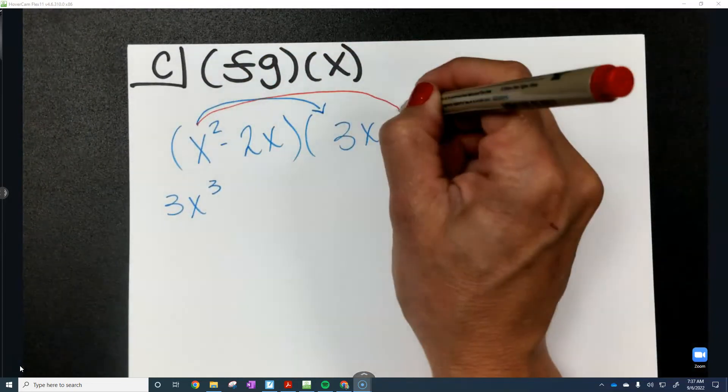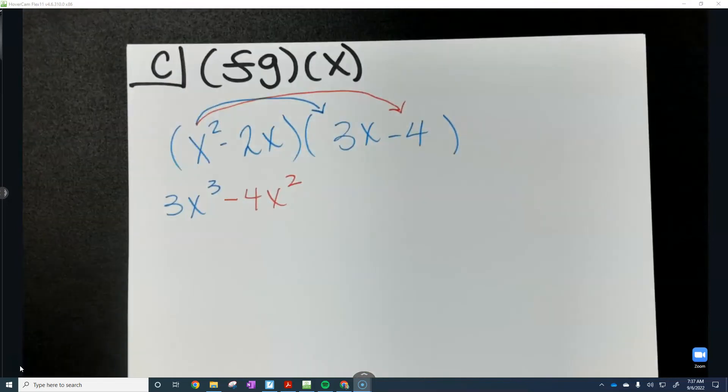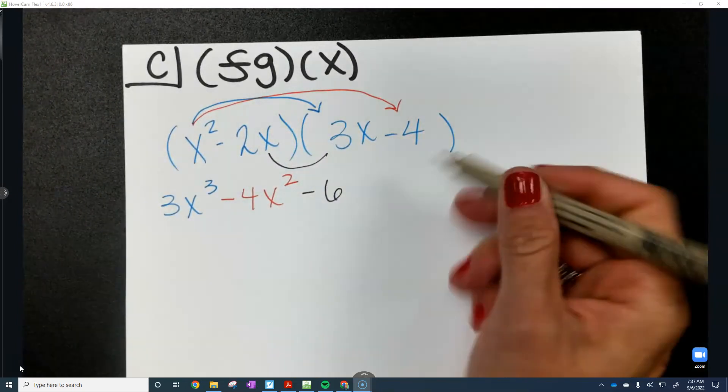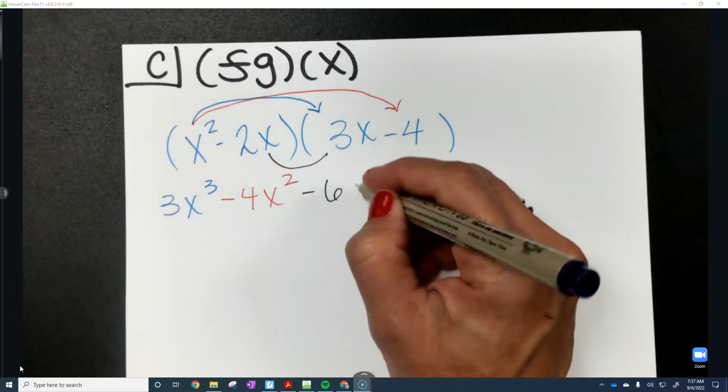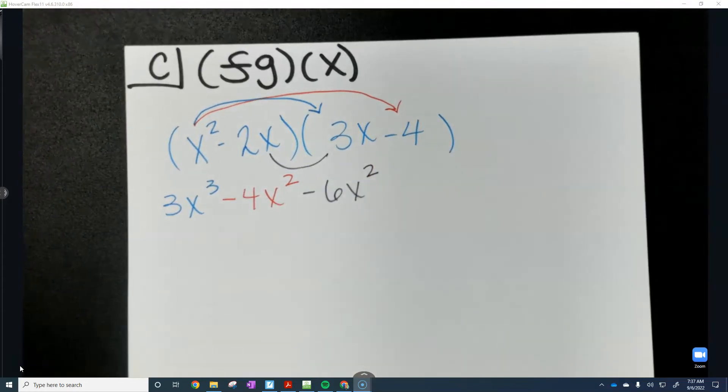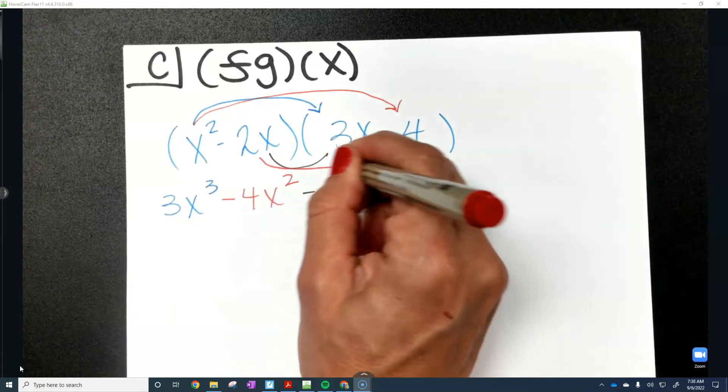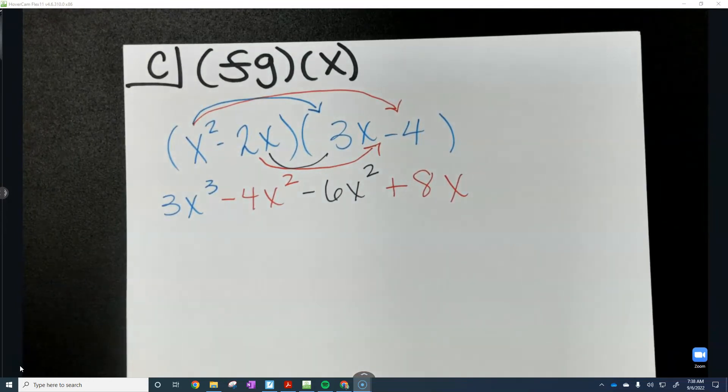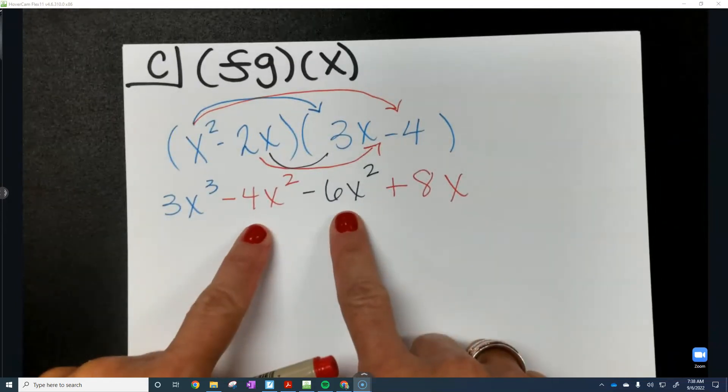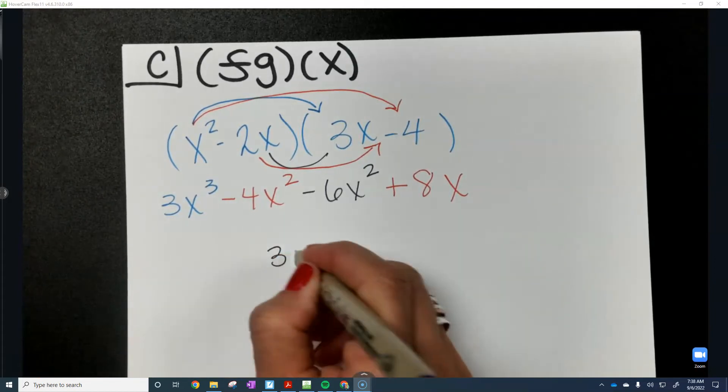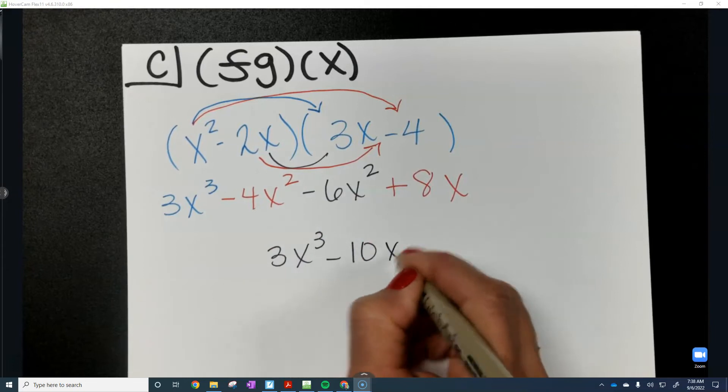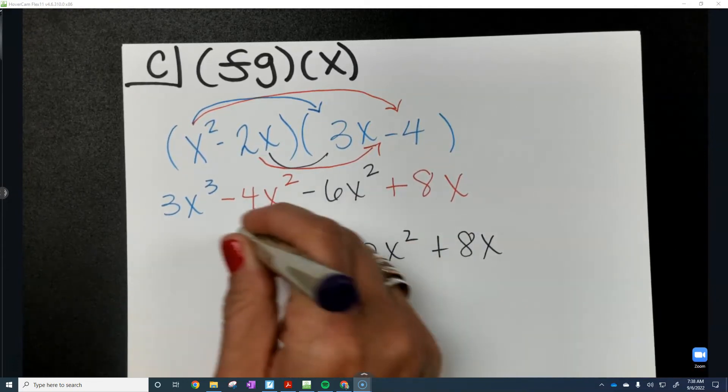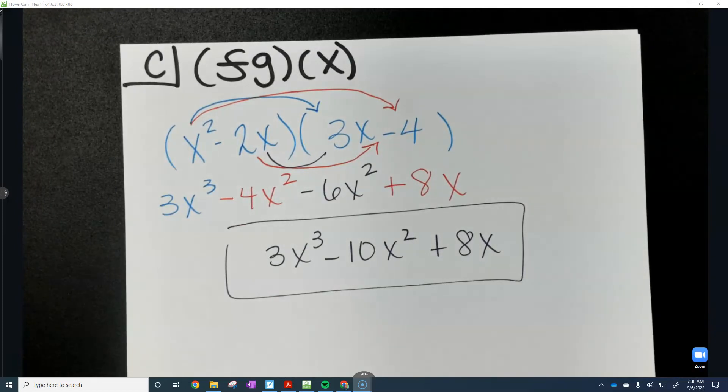And then of course, x squared times a negative 4 is negative 4x squared. Now we're going to work on the two inside terms. So a negative 2x times a positive 3x is negative 6x squared. And then your last two terms, a negative times a negative is a positive. Don't forget to write plus 8x. And then of course, we're going to combine like terms. And the only thing we can really combine are the two inside terms. So our simplified expression is 3x to the third minus 10x squared plus 8x. Now, I know there's a lot of stuff that we could probably factor out of that, but remember, we're just evaluating, just simplifying. So we're going to leave our answer like that.